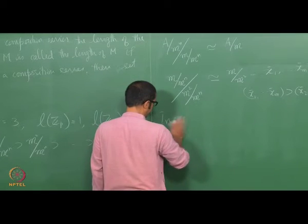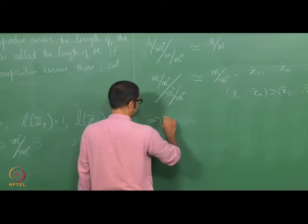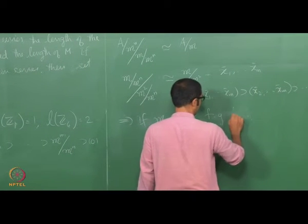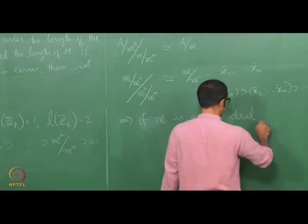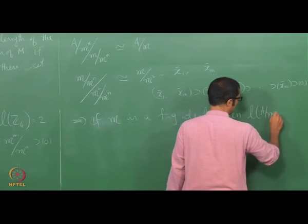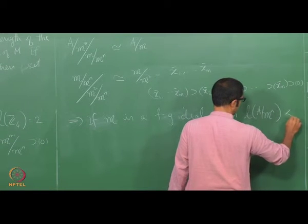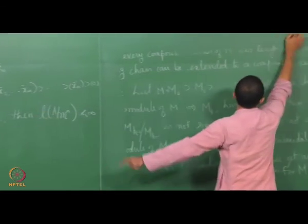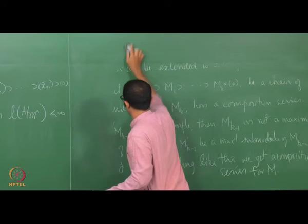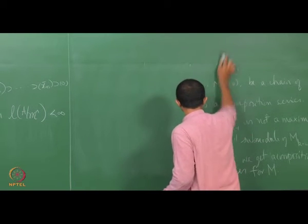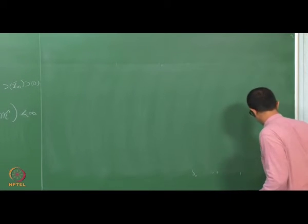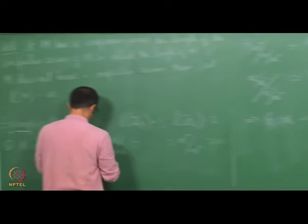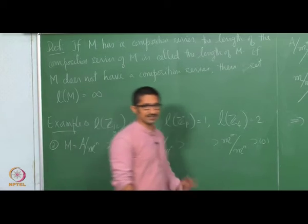This implies that if m is a finitely generated ideal — more generally, if A is Noetherian — then the length of A/m^n is finite. That is, A/m^n has a composition series. That composition series need not be exactly the chain A/m^n ⊃ m/m^n ⊃ m^2/m^n ⊃ ..., but we can insert terms in between and ultimately get a finite composition series.